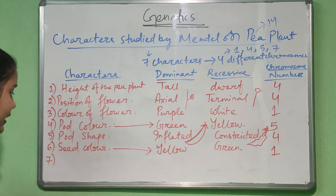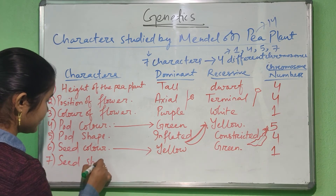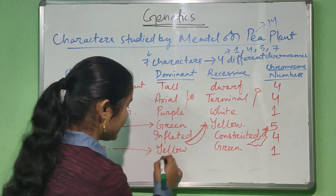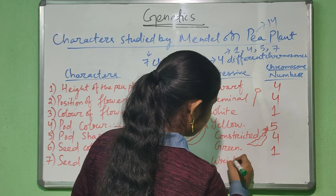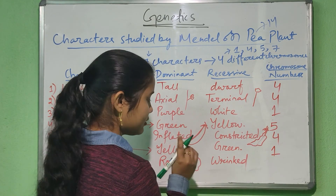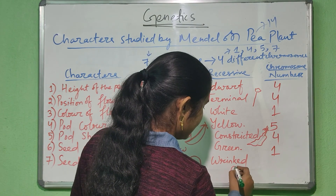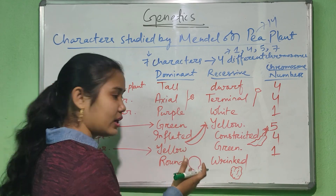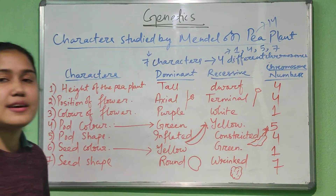The last character that Mendel studied is the seed shape. The shape of the seed can be round or wrinkled. A round seed is dominant and a wrinkled seed is recessive. This character is located in chromosome number seven.